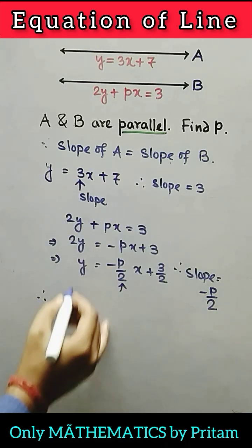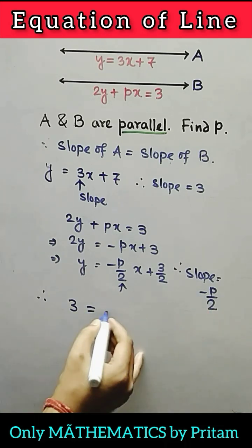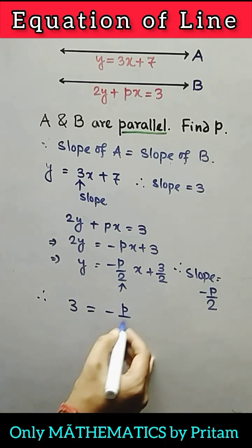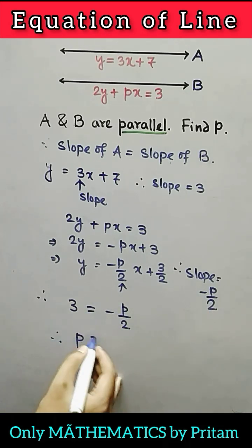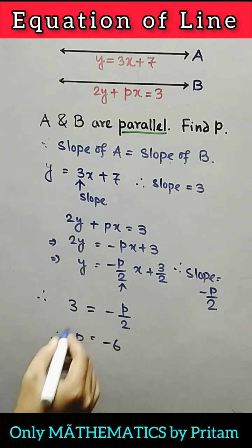we can write 3 equals minus p over 2. By cross multiplication, p equals minus 6.